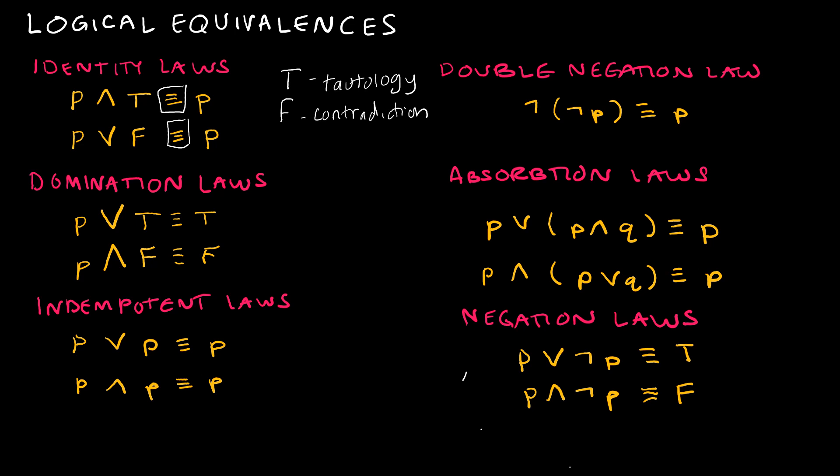Domination laws: P or true is equivalent to true. P and false is equivalent to false. The idempotent laws: P or P is equivalent to P, P and P is equivalent to P.